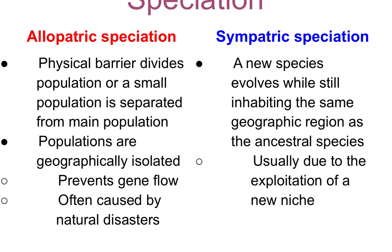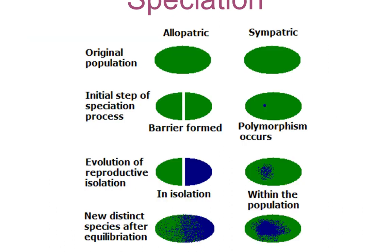Sympatric speciation is when a new species evolves. This is what we think of when we think of the word speciation. This has happened while still inhabiting the same geographical region, and the ancestral species usually due to the exploitation of a new niche — but the ancestral species could still be there. Sometimes a new niche may open up geographically, giving way to new resources.